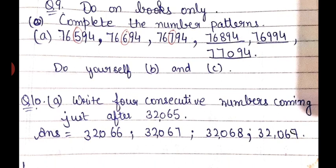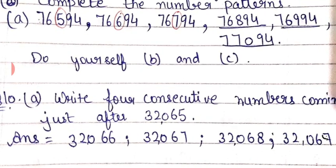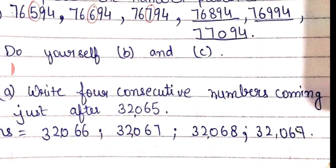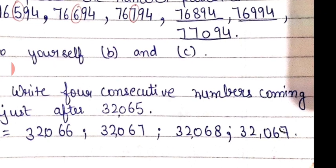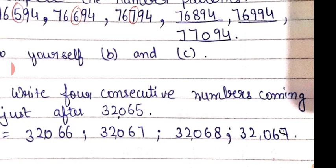The next question: write 4 consecutive numbers coming just after 32,065. Just after means you write the next numbers, simply adding 1. So after 32,065 we have 32,066, 32,067, 32,068, and 32,069.